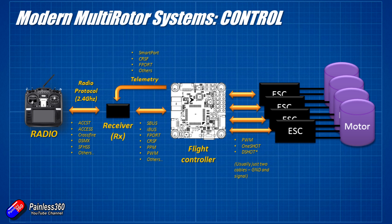And that, in summary, is the control system you're going to find on all modern multirotors. Everything is a variation on this — if it were a hexcopter with six motors, you'd just add two more motors. You can also have telemetry coming back from the ESCs to the flight controller, allowing it to monitor things like how much current each ESC is drawing and ESC temperature. Hopefully that's helpful and explains where all the names you've probably read in forums or seen in other video series fit in.